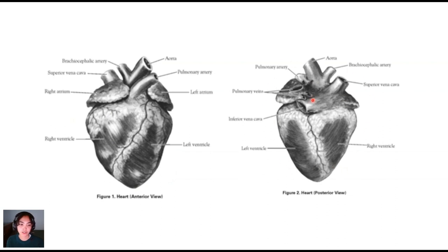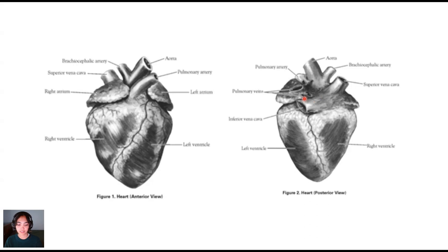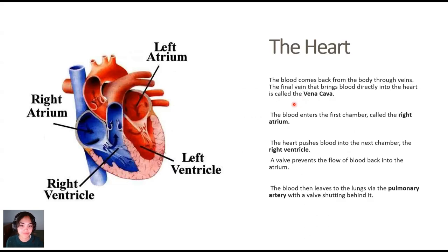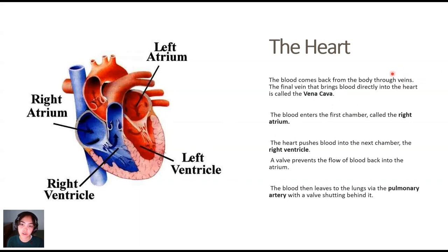Looking at it directly front on, the labelling helps because left and right can be tricky, especially when the camera image is reversed. The blood comes back from the body through the veins. Remember, the veins are the ones that go to the heart, whereas the arteries go away from the heart.